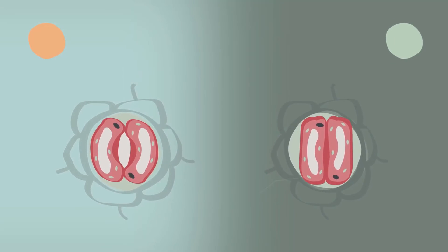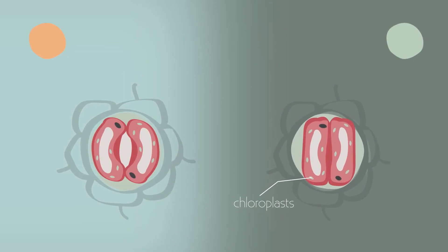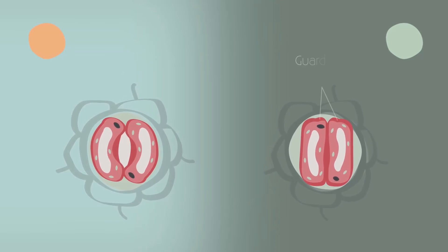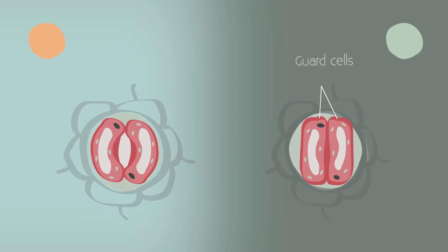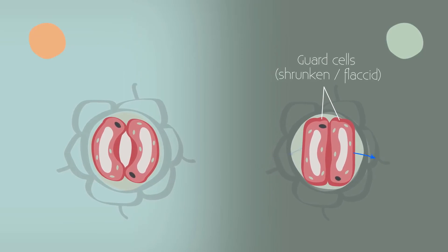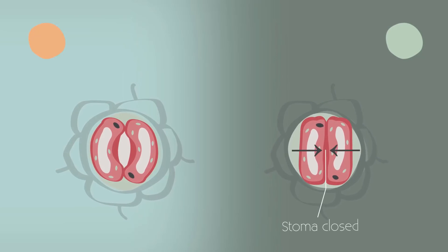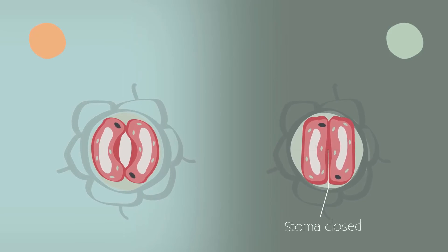At night, the sugar produced by chloroplasts gets used up, so the water potential of the guard cells increases. More water, less sugar. The guard cells lose water by osmosis and become flaccid, closing the stomata, and thus reducing water loss.